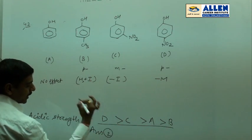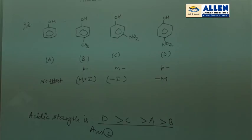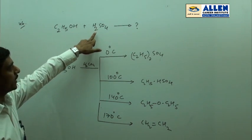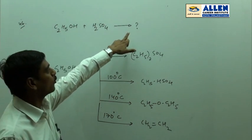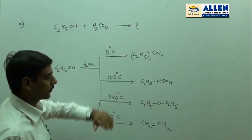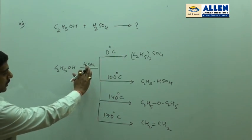Question number 46: Ethyl alcohol plus H2SO4. What product cannot be obtained under any condition? Ethyl alcohol in presence of sulfuric acid shows different reactions at different temperatures.